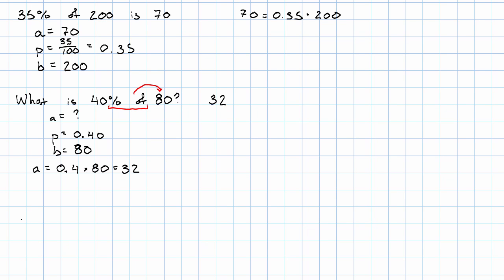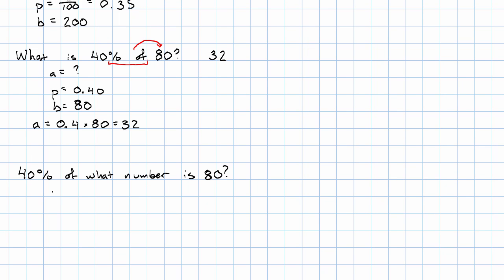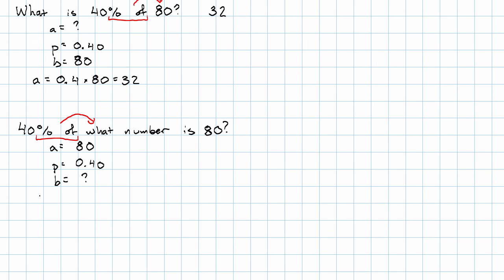But we can also answer questions like, 40% of what number is 80? So 40% is, again, our percent, but now it says percent of what number? So the base, what we're taking the percent of, that's what we want to find out. The result of taking that percent then gives me 80. So that's the amount. So now we'll have the equation 80 is 40% of B.